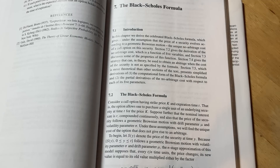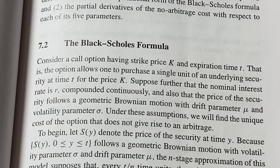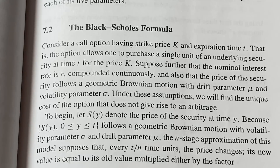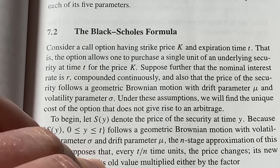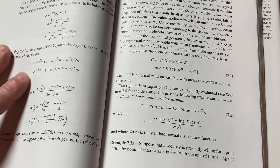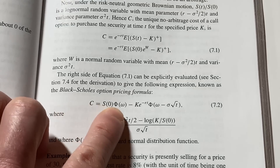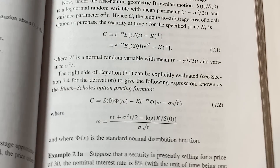Chapter 7 is where he derives the Black-Scholes formula. It begins: 'Consider a call option having strike price K and expiration time T. Suppose the nominal interest rate is r, compounded continuously, and that the price follows a geometric Brownian motion with drift parameter mu and volatility parameter sigma. Under these assumptions, we find the unique cost of the option that does not give rise to an arbitrage.' There's beautiful mathematics building to this point. Here is the Black-Scholes pricing formula — the result that won them the Nobel Prize. What an incredible, powerful formula.